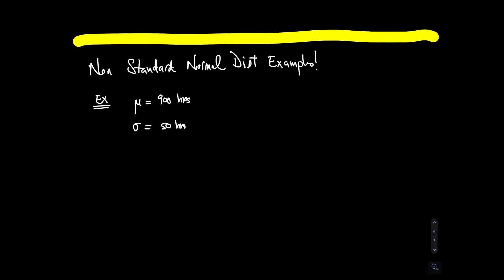With that information, find the probability that if I randomly select a light bulb from the production line, it will last at most 820 hours — or less than 820 hours. For the continuous case, less than or equal to 820 versus less than 820 doesn't make a difference — it only matters for the discrete case.